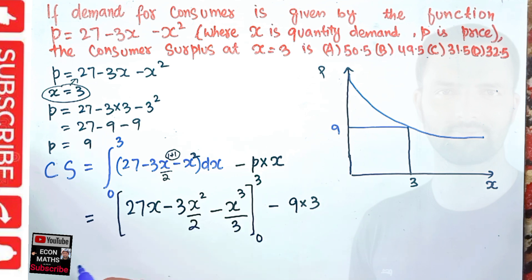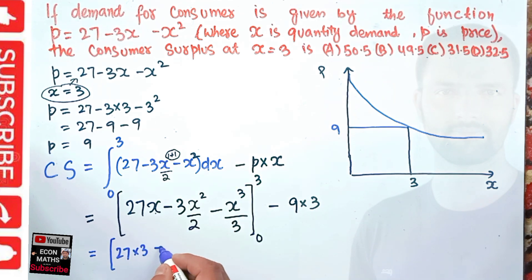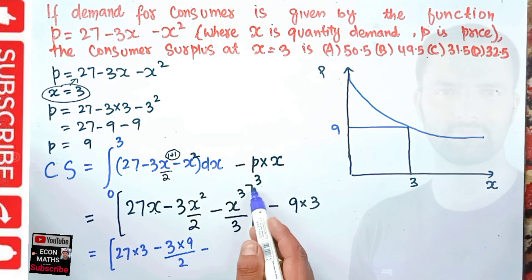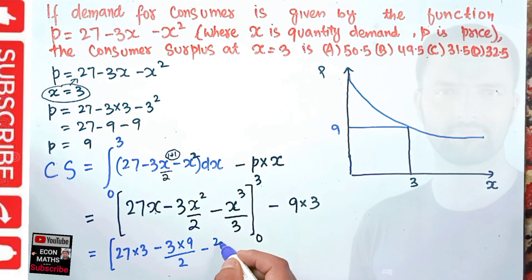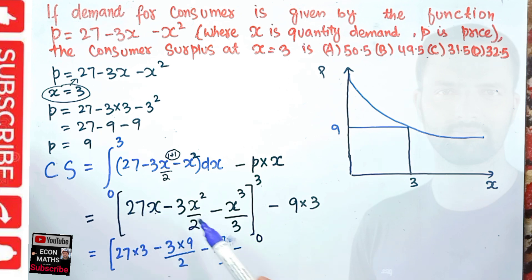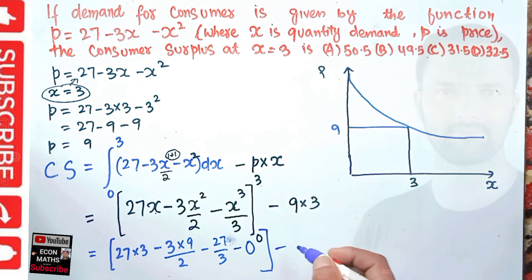Evaluating at the upper limit x = 3: we get 27(3) minus 3(9)/2 minus 27/3. When we evaluate at the lower limit x = 0, all terms become 0. So we subtract 0 for the lower limit. Then we subtract the total expenditure, which is 9 times 3 = 27.